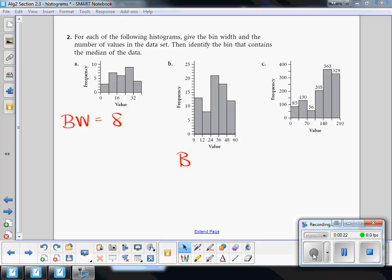What's the bin width in B? These are difficult, aren't they? 12, yes, each bin width is 12.